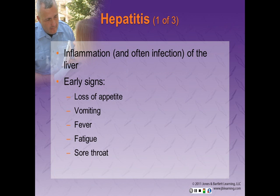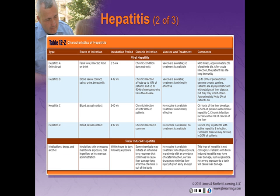Hepatitis is inflammation and often infection of the liver. Early signs include loss of appetite, vomiting, fever, fatigue, a sore throat, jaundice, and right upper quadrant abdominal pain. As shown in Table 12-2, there are the characteristics of hepatitis.